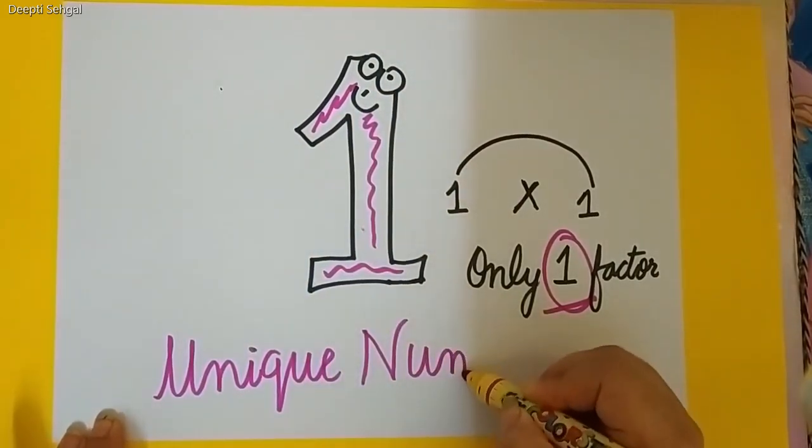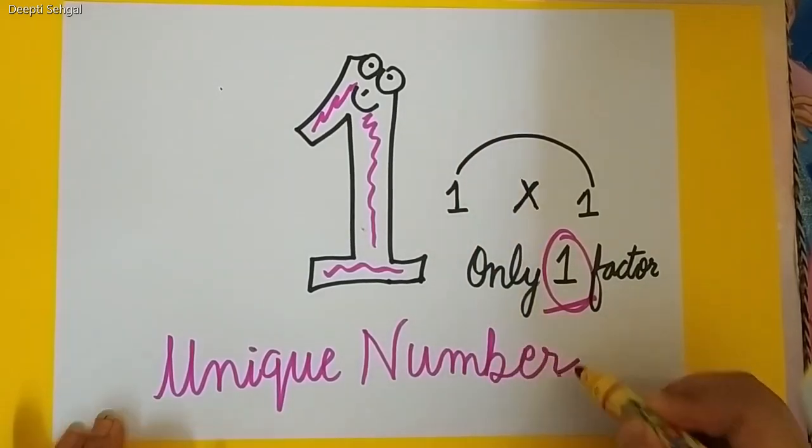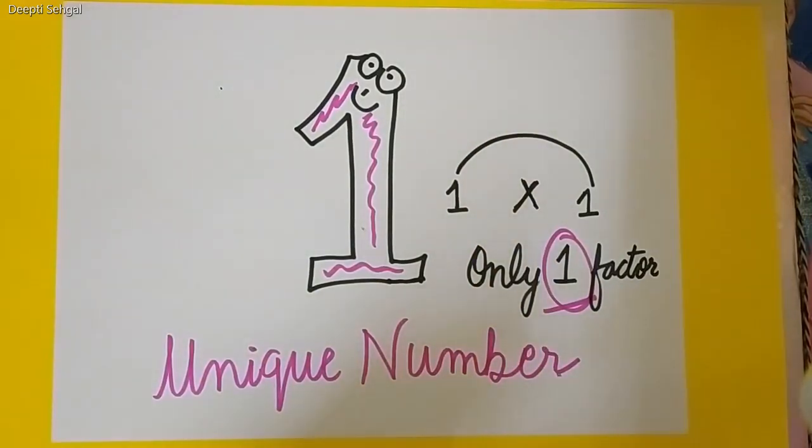So, today, we learned about prime numbers, composite numbers and unique number 1. Remember always, prime, P-R-I, I means one and me. One and me. Composite, C for composite, C for colorful. Colorful numbers are composite numbers and 1 is a unique number.